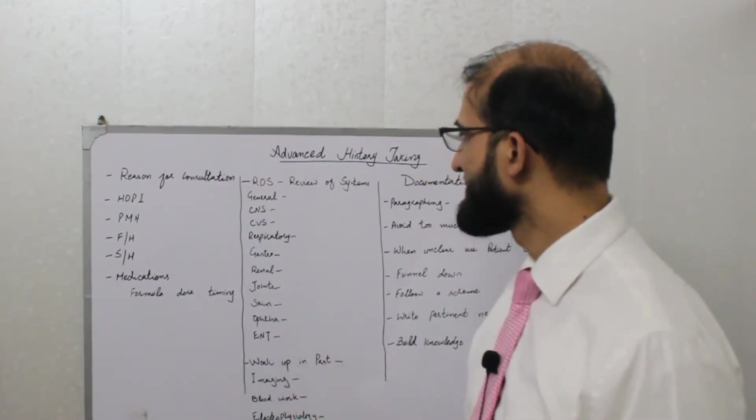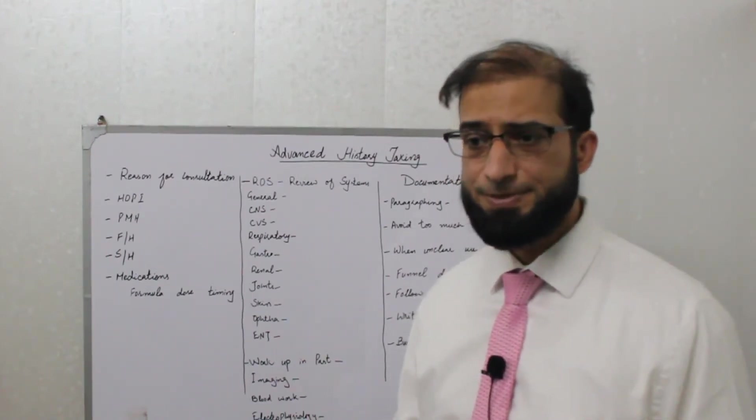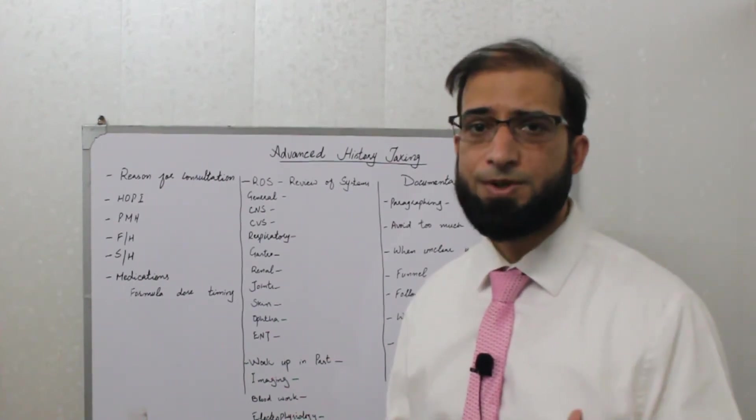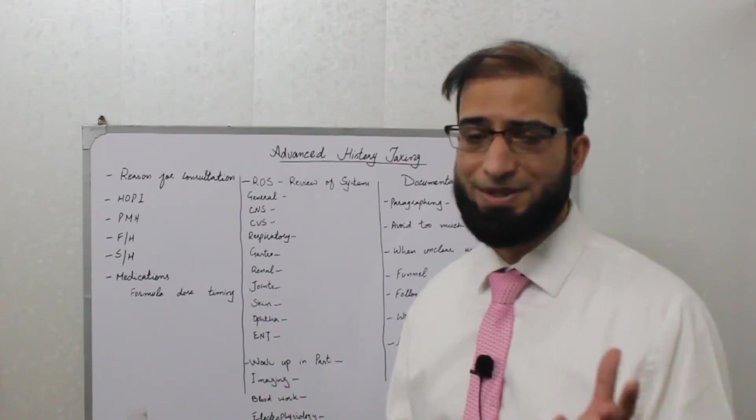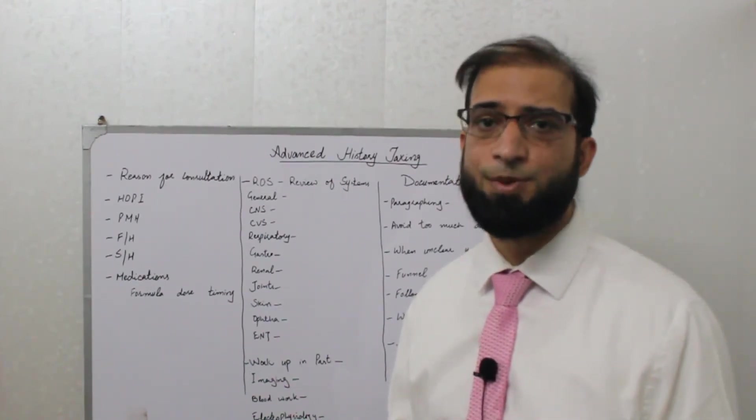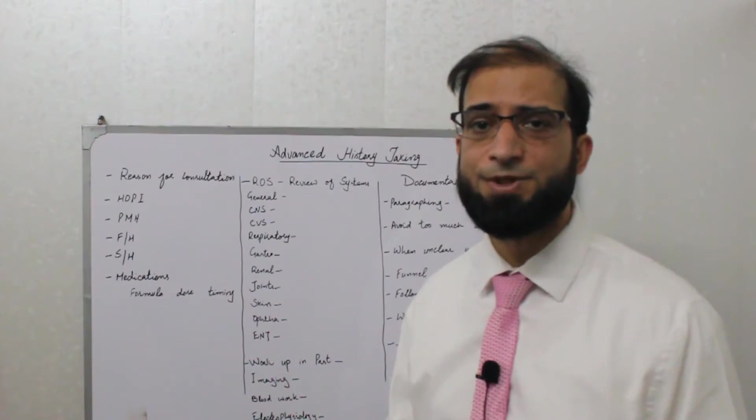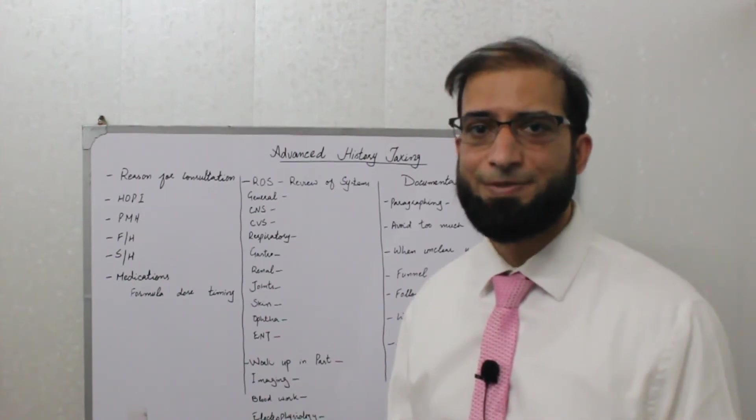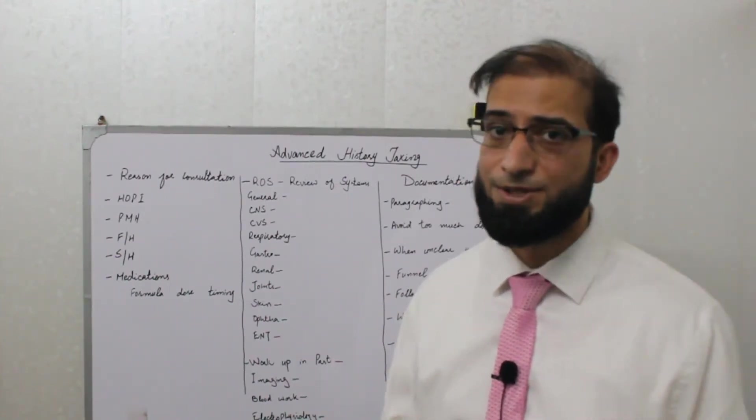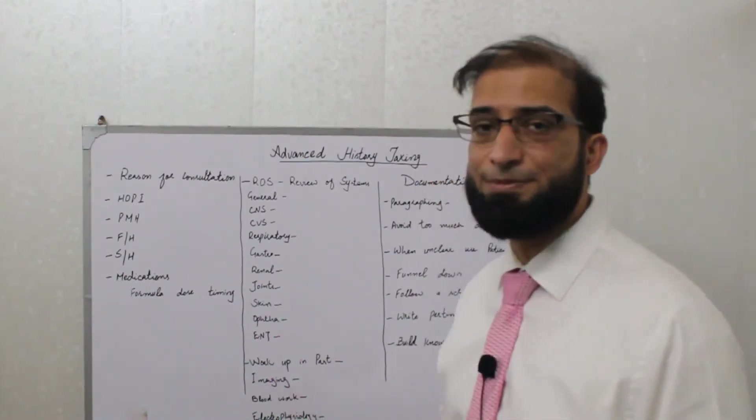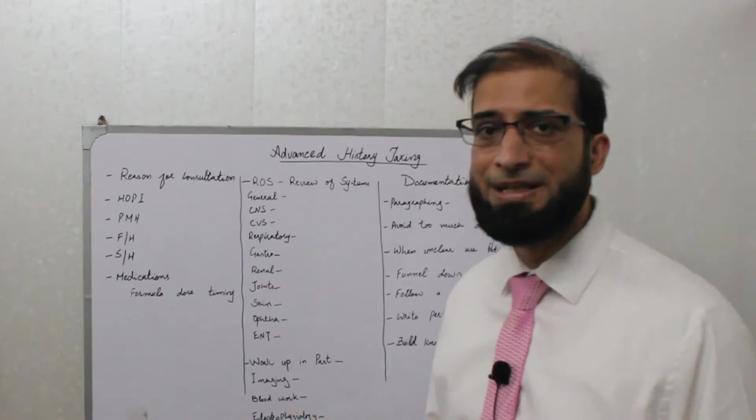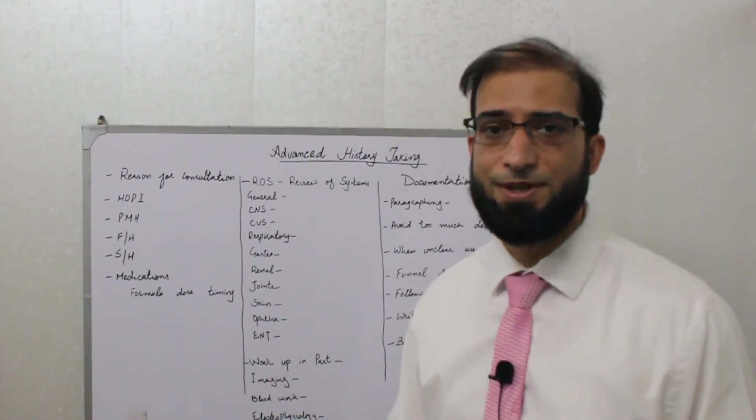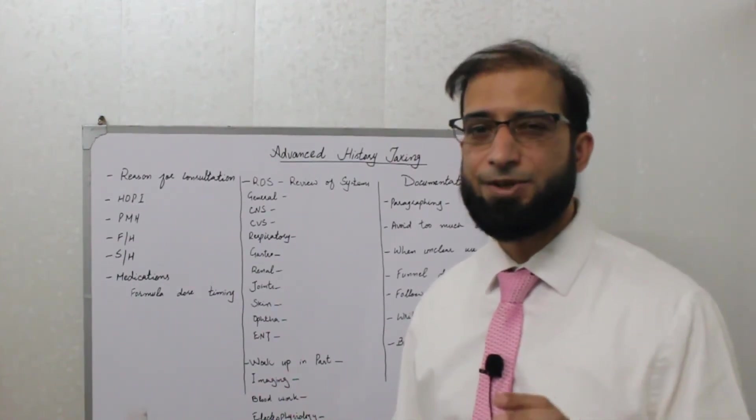Then the other part of the advanced history taking skills is work up in the past, especially if it's a follow-up patient or a patient who has a chronic history. There's no need to document but we need to get through, sometimes there are a lot of pages. It could be a hundred or more pages of investigations that patient brought for you to review. I quickly skim through it to look for the pertinent labs done in the past which is related to my field like in neurology or in neuromuscular. So I look for any particular imaging done. I look for any blood workup done pertinent to the question patient came to me for.